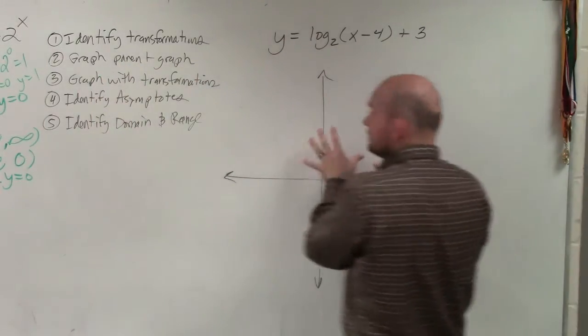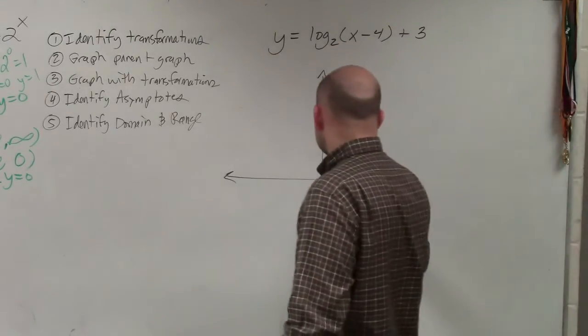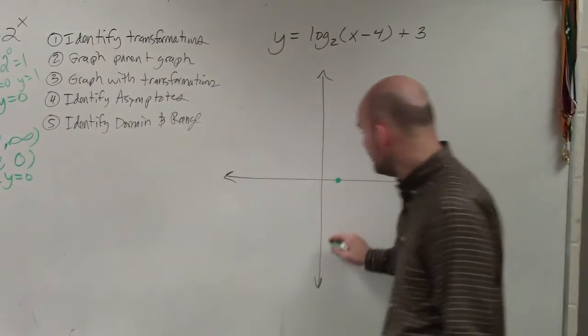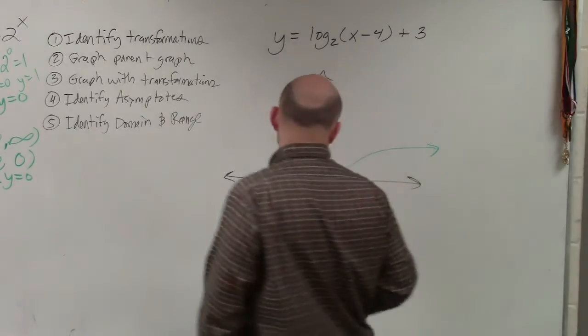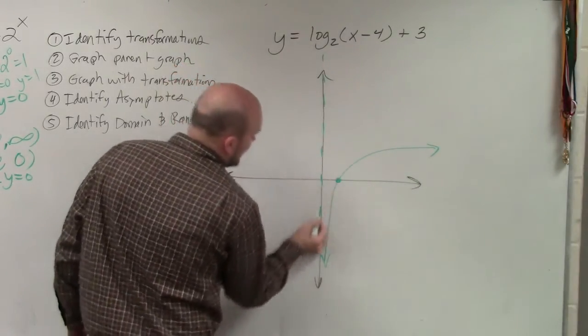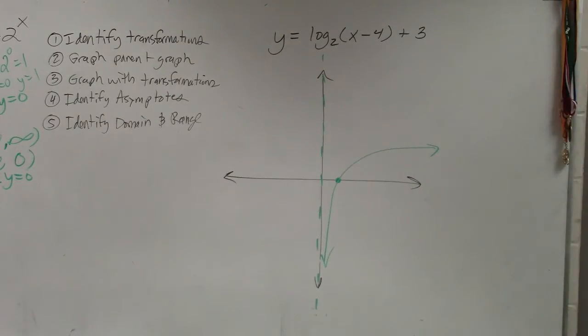The graph for a logarithm and the graph of an exponential are inverse functions of each other. So rather than having a y-intercept at 0 comma 1, I want you guys to understand that a logarithm has an x-intercept at 1 comma 0. And instead of having a horizontal asymptote at y equals 0, a logarithm has a vertical asymptote at x equals 0.